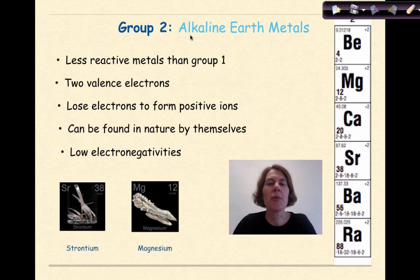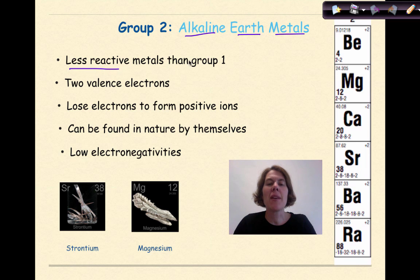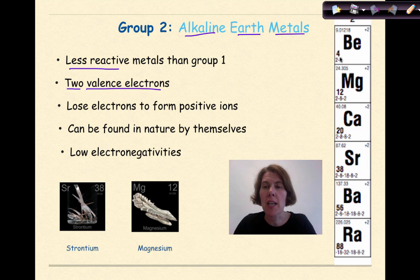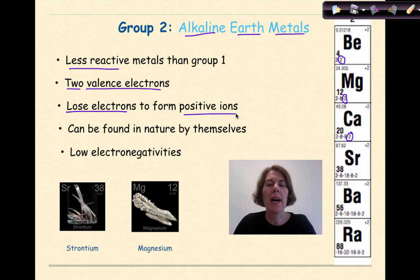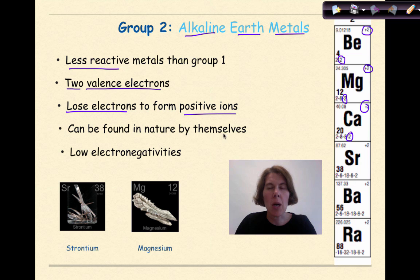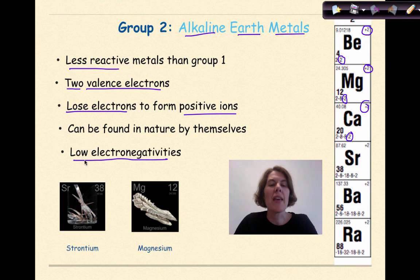Now let's talk about Group 2, the alkaline earth metals. These metals are less reactive than metals in Group 1. They have 2 valence electrons — we can see this by looking at the last number of the electron configuration, which all end with the number 2. They will also lose electrons to form positive ions, shown as a plus 2 charge. They can be found in nature by themselves, but they react pretty quickly with oxygen in the air to get a coating on the outside. They have low electronegativities and ionization energies.